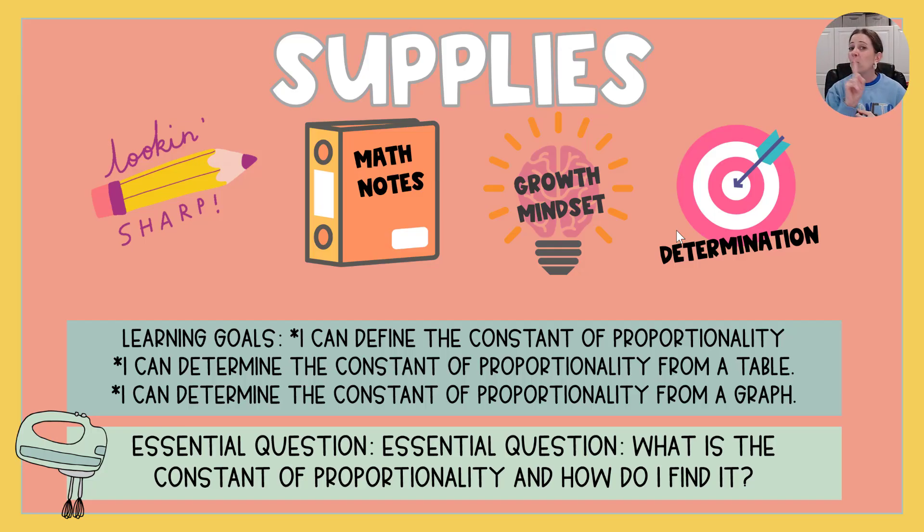Alright we have not one not two but three learning goals today. Learning goal number one: I can define the constant of proportionality. Learning goal number two: I can determine the constant of proportionality from a table. And learning goal number three: I can determine the constant of proportionality from a graph. Here we go.